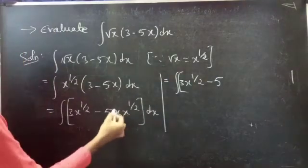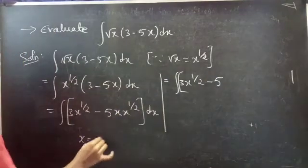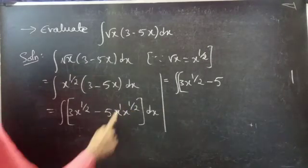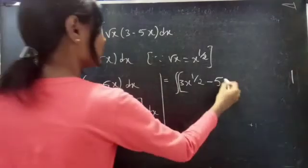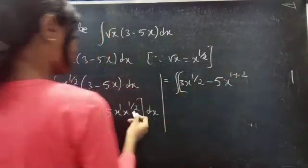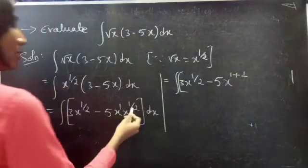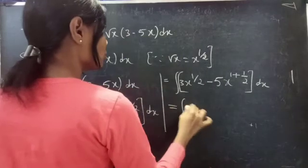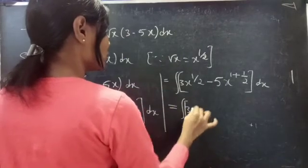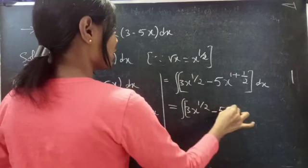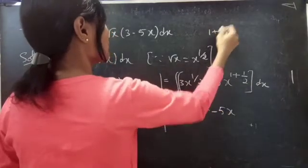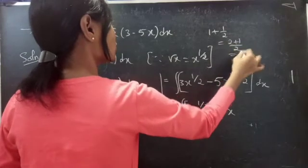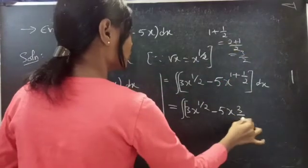Since bases are equal, powers must be added. We are having x, which means x to the power 1. So powers must be added: we will get 1 plus 1 by 2. So this equals to the integral of 3 into x to the power 1 by 2, minus 5 into x to the power 1 plus 1 by 2, which equals 2 by 2 plus 1 by 2, equals 3 by 2, dx.